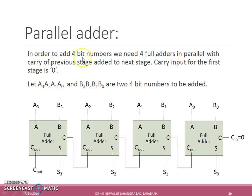In order to add two 4-bit numbers we need four full adders in parallel with carry of previous stage added to the next stage carry input, while carry input of first stage will be 0.